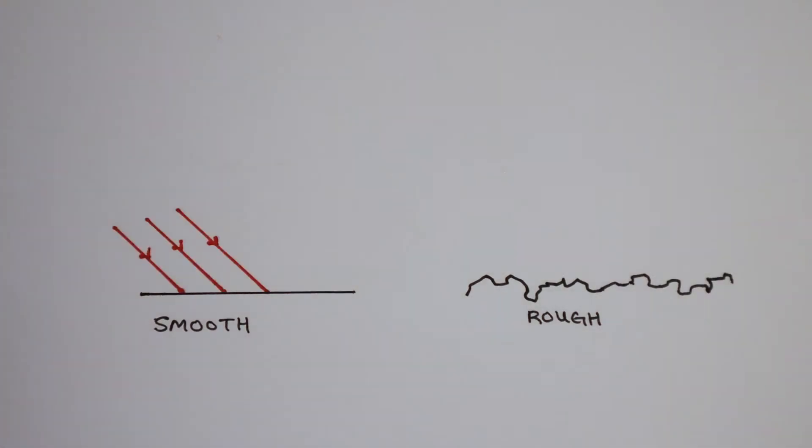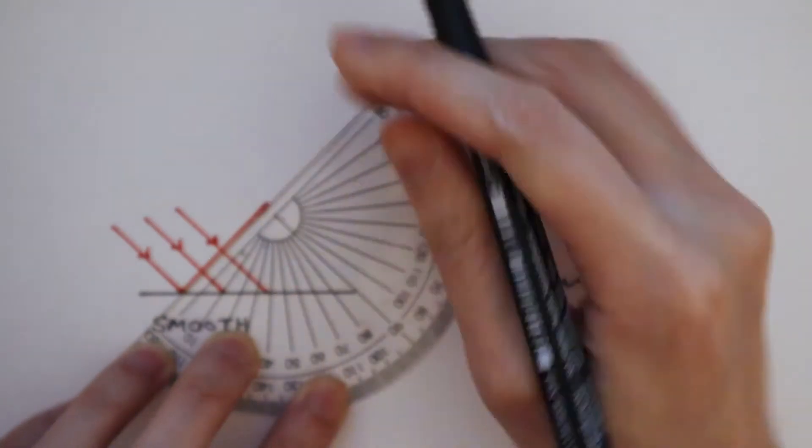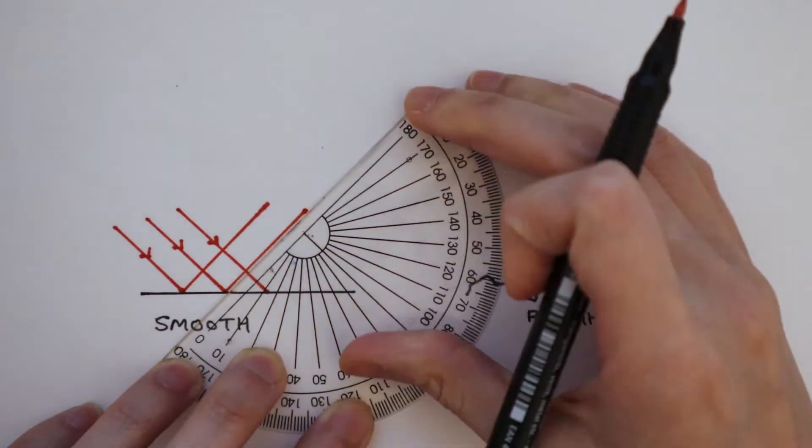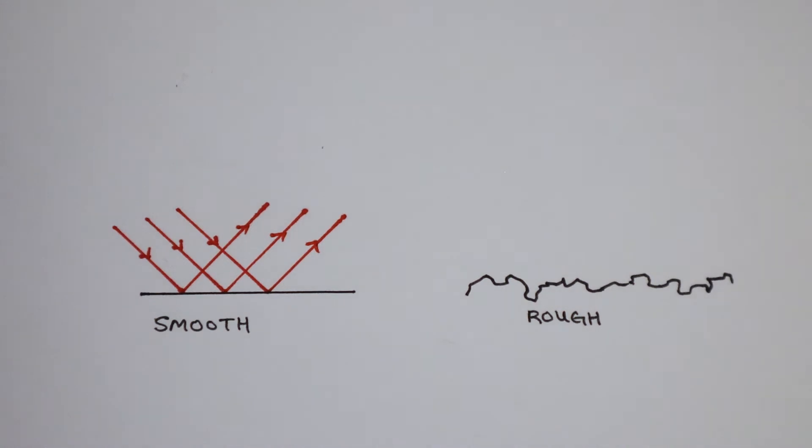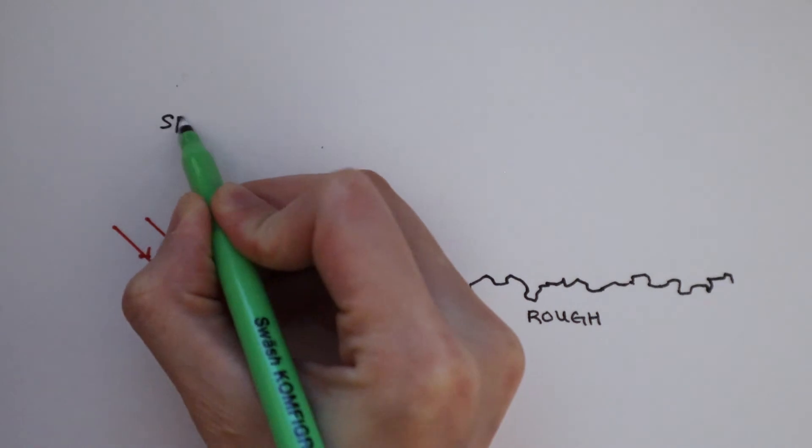When I shine light onto a smooth surface, all the light rays will reflect at the same angle. All these rays are parallel to each other. We call this type of reflection a specular reflection.